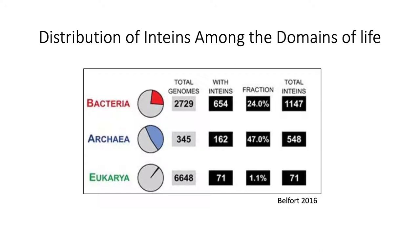Intines are distributed fairly widely among the three domains of life: bacteria, archaea, and eukaryota. We see them pretty widespread in bacteria and archaea. In eukaryota, they are limited to fungi and protists — limited to single-celled organisms almost entirely. They do seem to exist in plastids such as chloroplasts, but they are absent from the nuclear genome of all multicellular domains of life.